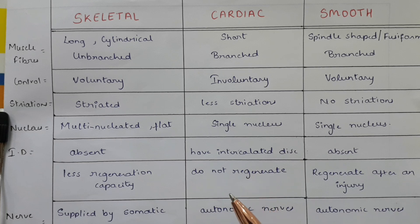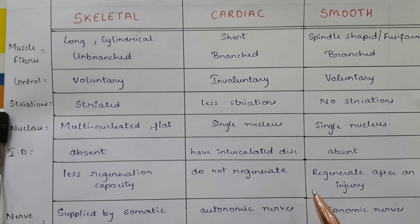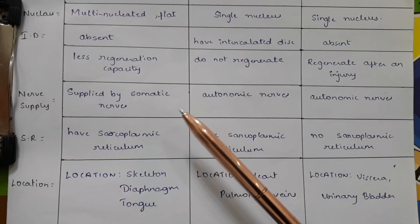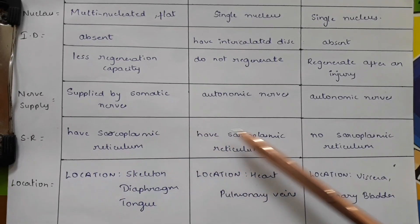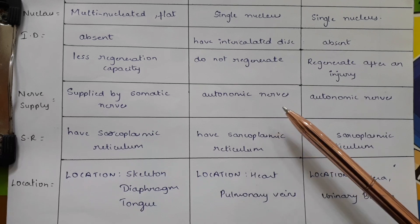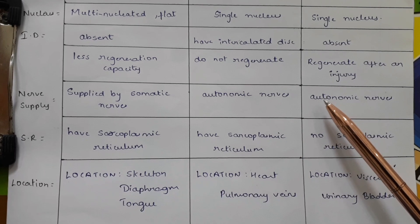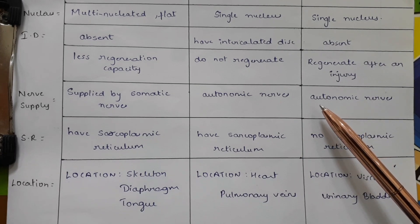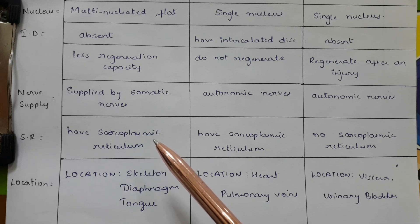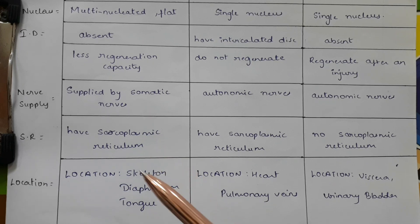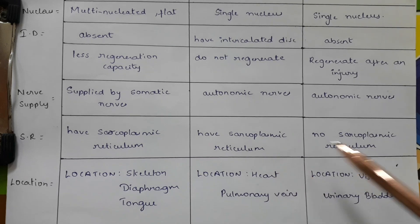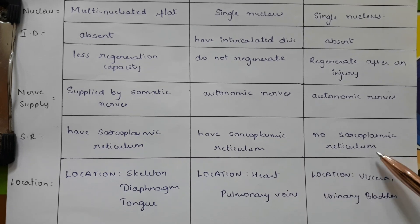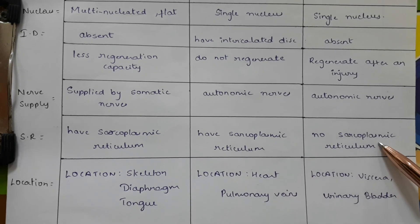Skeletal muscles have less regeneration capacity. Cardiac muscles do not regenerate. Smooth muscles regenerate after an injury. Skeletal muscles are supplied by somatic nerves; cardiac muscles by autonomic nerves; and smooth muscles also by autonomic nerves. Skeletal and cardiac muscles both have sarcoplasmic reticulum, whereas smooth muscles do not have sarcoplasmic reticulum.